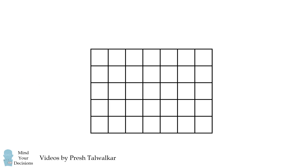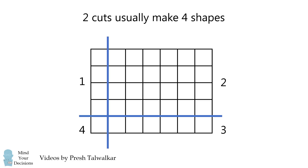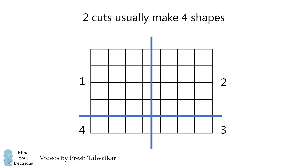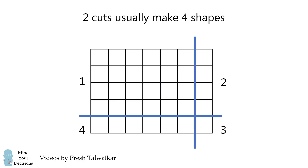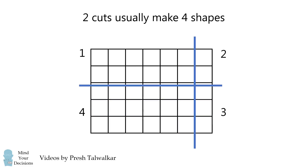So how can we solve this problem? You might get started by making two cuts in this grid, but you'll notice it divides the rectangle into four shapes, and two cuts usually make four shapes. So this caused a lot of confusion — how are you supposed to make two cuts which only result in three shapes?